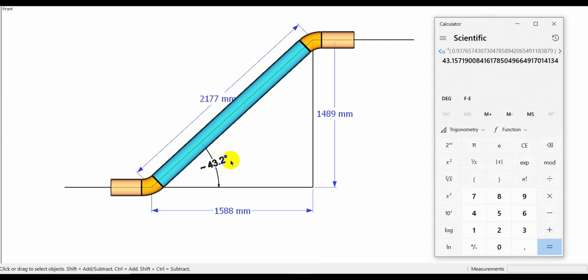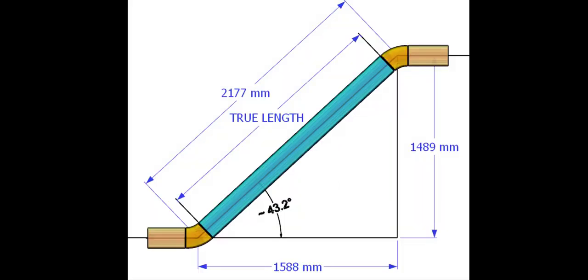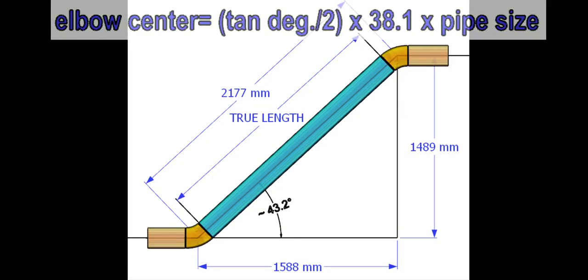Now we need to calculate the elbow center to determine the true length of the pipe. Assume the pipe size is 6 inches. The elbow center formula is degree tan divided by 2 times 38.1 times pipe size in inches.